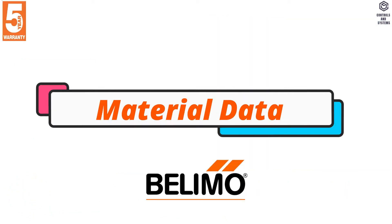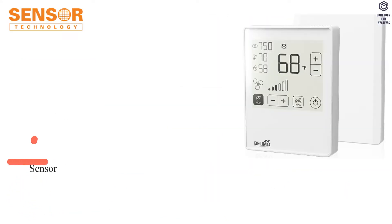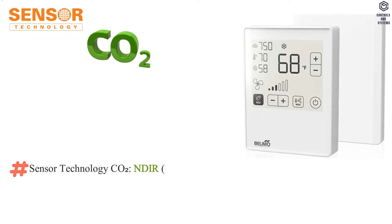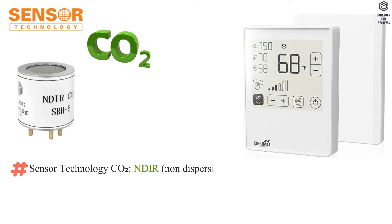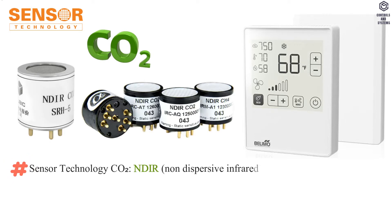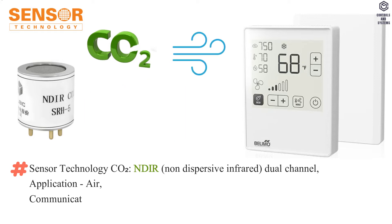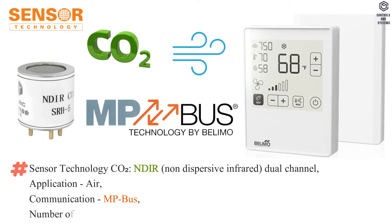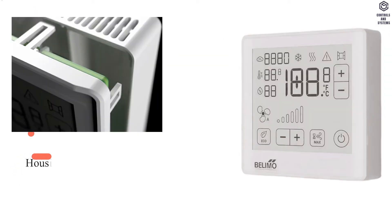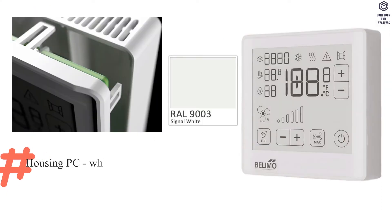Material data: Sensor technology is CO2 NDIR — non-dispersive infrared — dual channel. Application is air. Communication is MPBus; number of nodes is MPBus maximum 8. Housing is PC white RAL 9003.